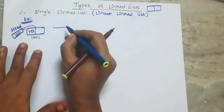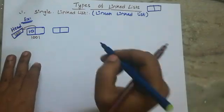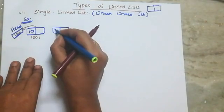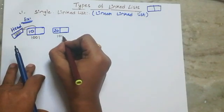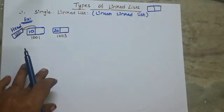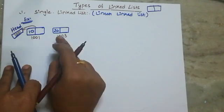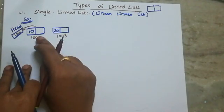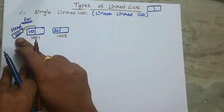Next I am creating another node — second node create. I will show data element 20. This node is at address 1003. So 1003 is the memory address stored. The first node address part stores the second node address. This node is the head pointer.